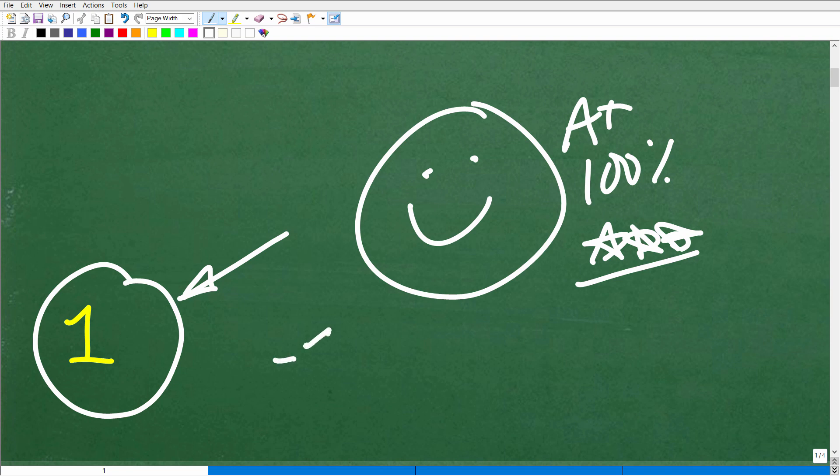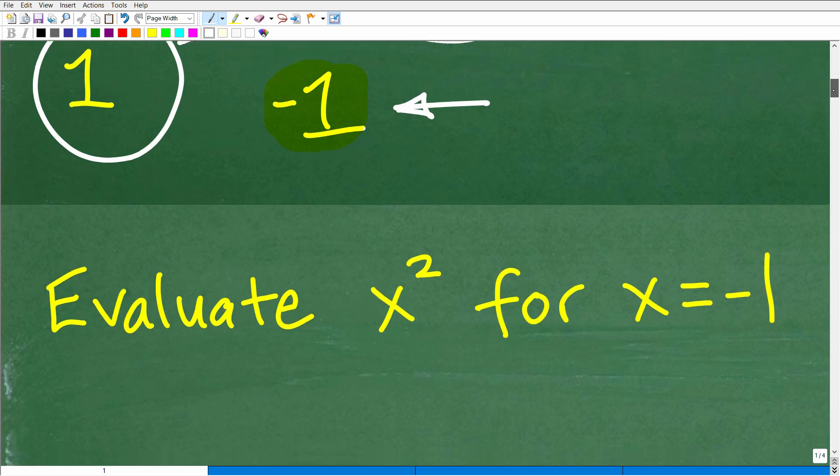Now, if you got negative 1, you're in good company because a lot of people would put negative 1 down as an answer. So if you made this error, if you actually put down negative 1 as your answer, I'm glad that you did because I'm going to be able to clear up maybe some confusion that you might be having. So let's get into the problem.